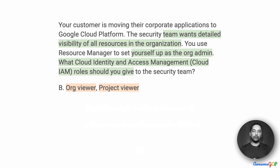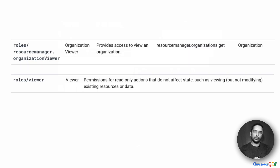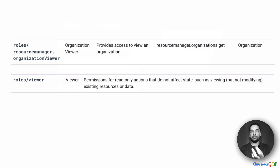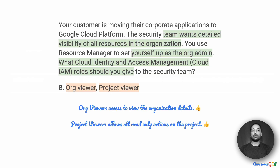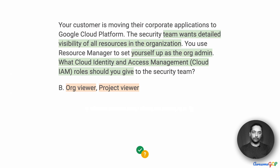Option B suggests that we give org viewer and project viewer. The organization viewer provides access to view the organization. The primitive role viewer gives read-only actions to whatever resource that role is applied on. So in this case they are able to view the resources but not modify them, which is what we want. The combination of org viewer and project viewer seems a good option and might be the right answer, but we'll keep looking at further options.